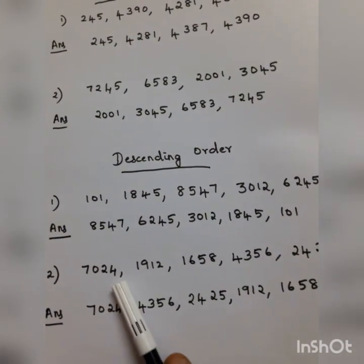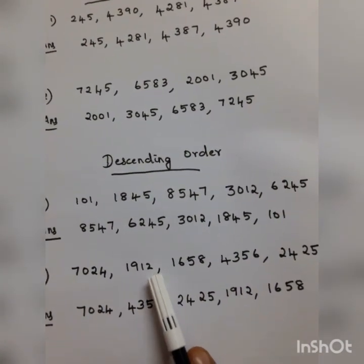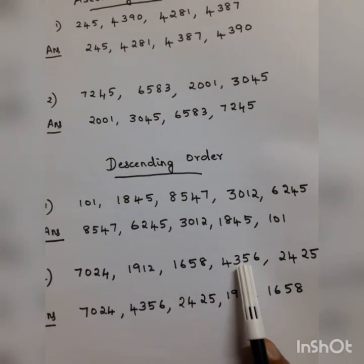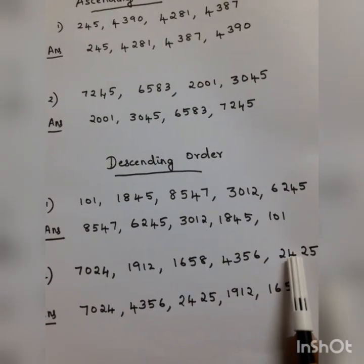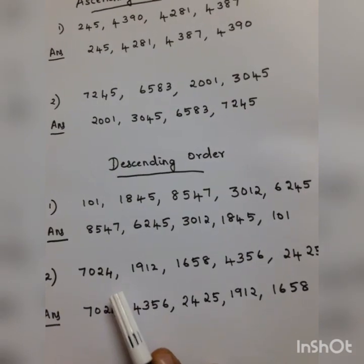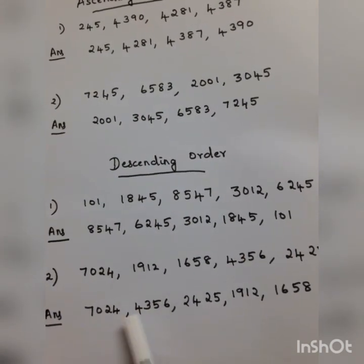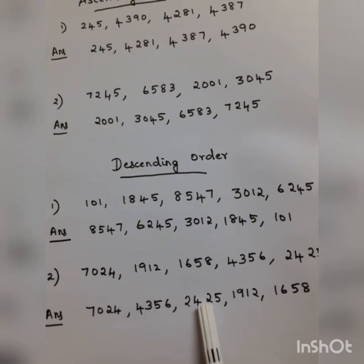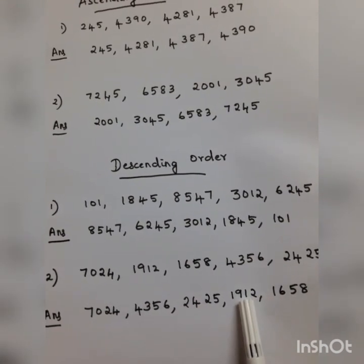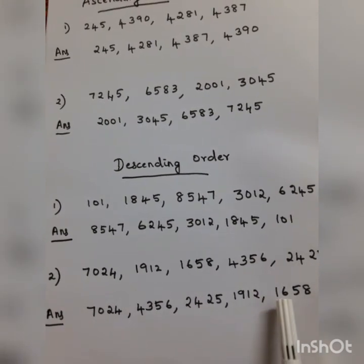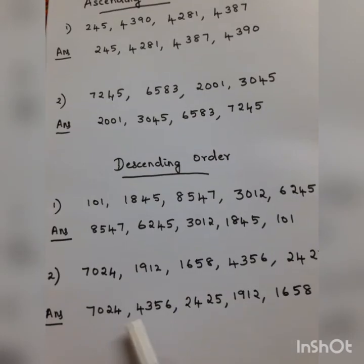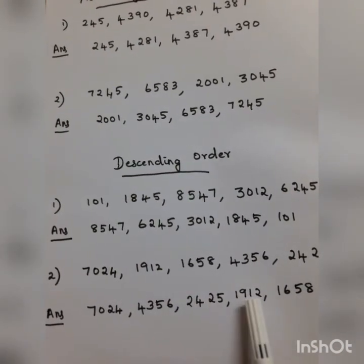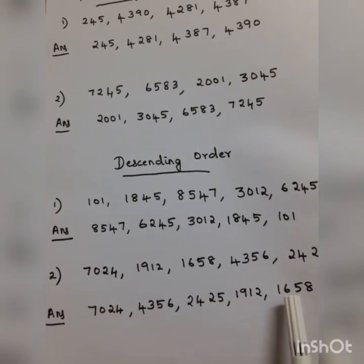The next sum has numbers 7,024, 1,912, 1,658, 4,356, and 2,425. The largest number is 7,024. Then 4,356, 2,425, 1,912, and 1,658. Arrange these numbers in descending order from biggest to smallest.